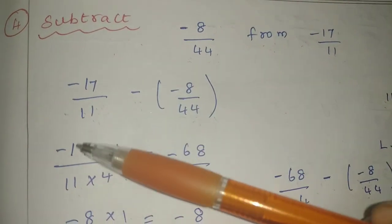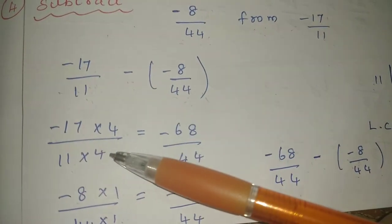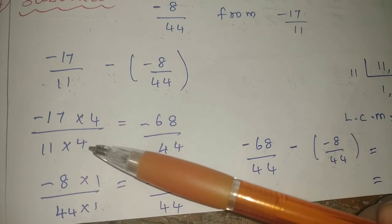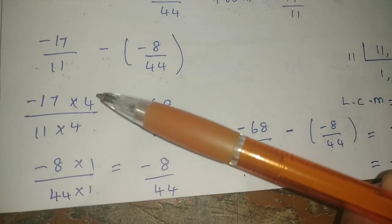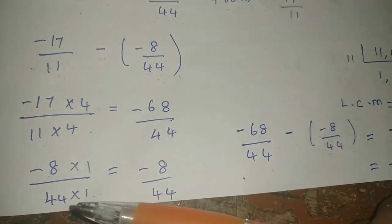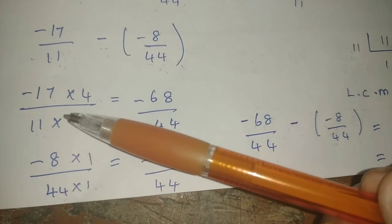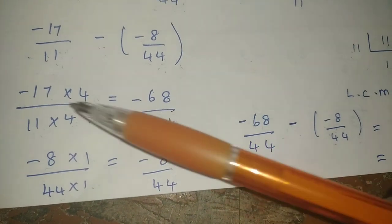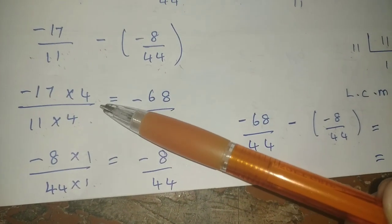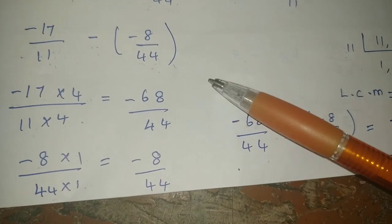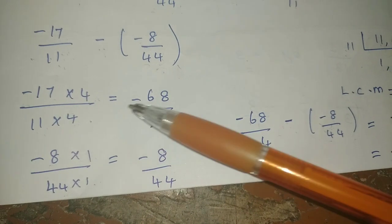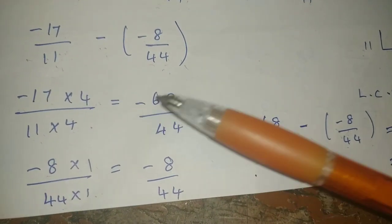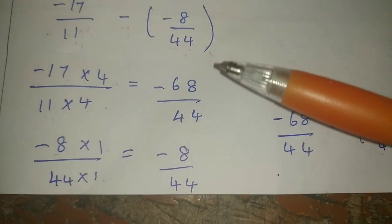So in the sum, for minus 7 by 11: 11 goes into 44 four times. The denominator factor is 4. Now multiply the numerator: 11 into 4 is 44. Then 7 times 4 is 28. Balance 2, 1 times 4 is 4, 4 plus 2 is 6. So we get minus 28 by 44.